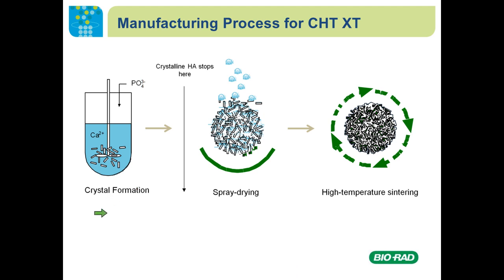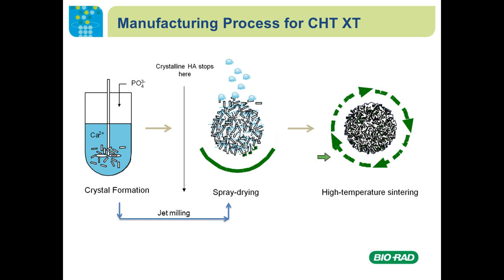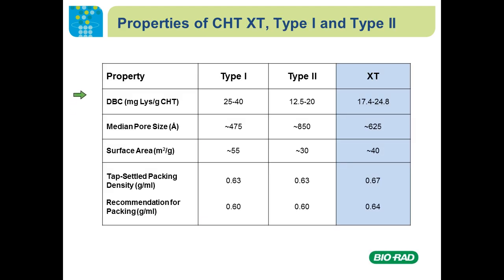CHT is made by mixing calcium hydroxide and phosphoric acid, which forms tiny crystals. These are spray dried in a process similar to making milk, then sintered at high temperature and sieved to the proper size. The introduction of CHT XT involves a jet milling step where the crystal slurry is put into a homogenizer, breaking down larger crystals into smaller ones before spray drying. Key properties include binding capacity, pore size, surface area, and packing density.